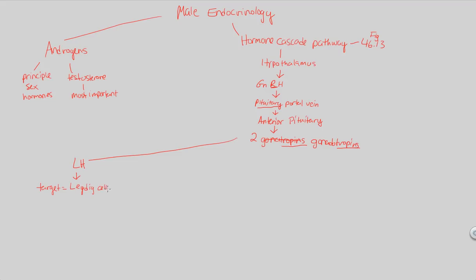After the Leydig cells receive LH from the blood reaching the testes, they respond to this LH message and secrete androgens — principal sex hormones like testosterone. So the Leydig cells therefore secrete testosterone. We're now going to see the specific physiological responses and effects that testosterone has based on this hormone cascade.